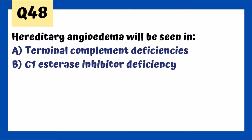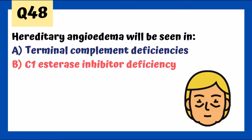Hereditary angioedema is due to C1-esterase inhibitor deficiency. Without C1-esterase inhibitor, C1 and the complement pathway become over-activated, leading to vasodilation and edema. The most classic finding is periorbital edema caused by over-activation of complement.